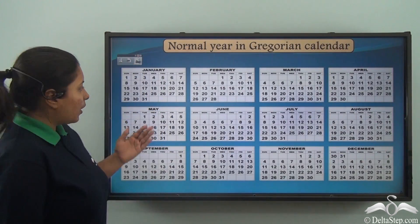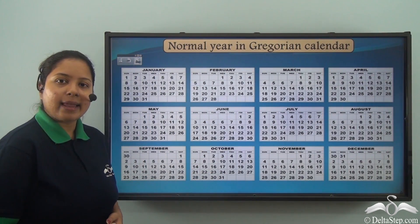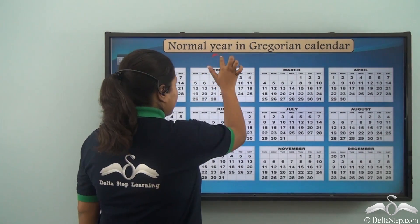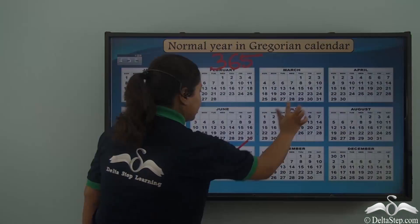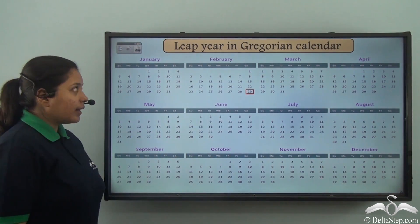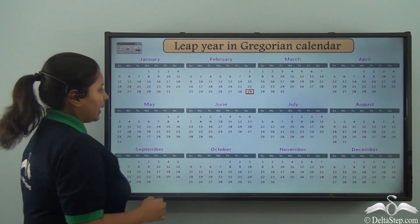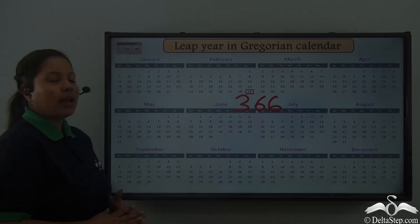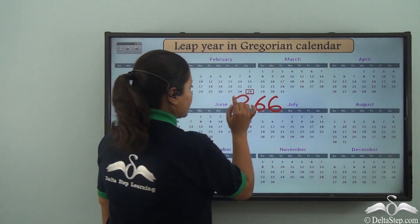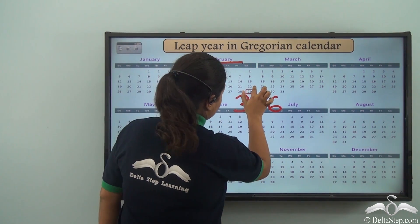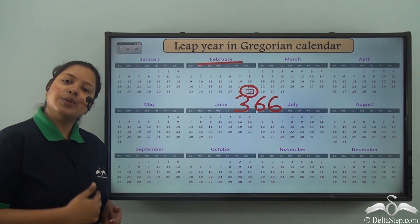How does a normal year look like? A normal year in the Gregorian calendar has got 365 days. But what about the leap year? In the leap year there are 366 days. And where was the extra day added? It was added in the month of February. February had 29 days instead of 28 days.